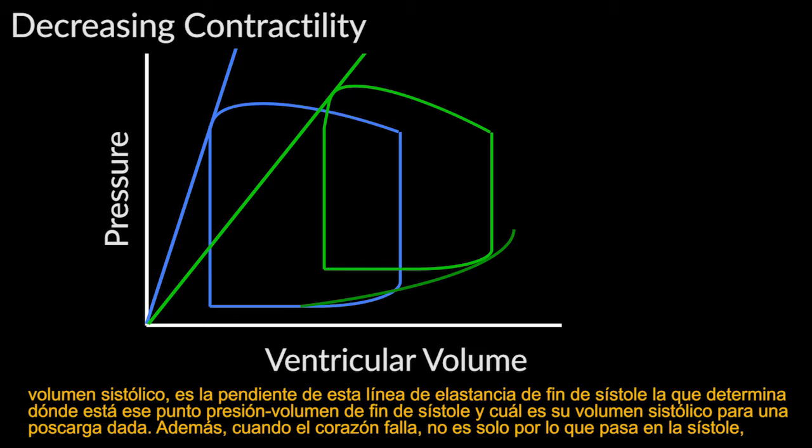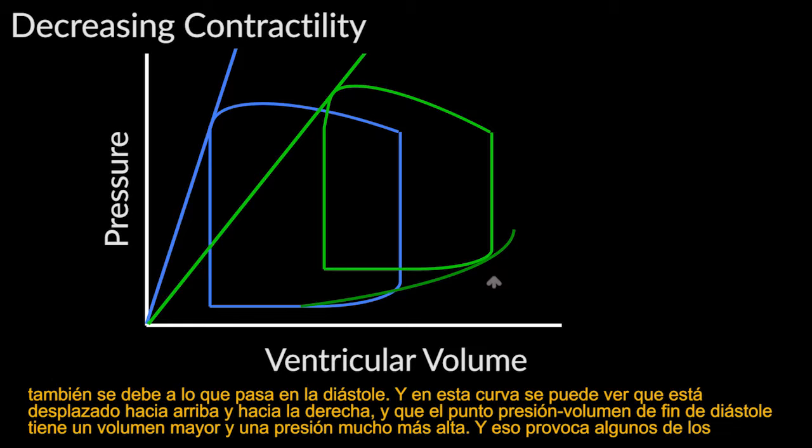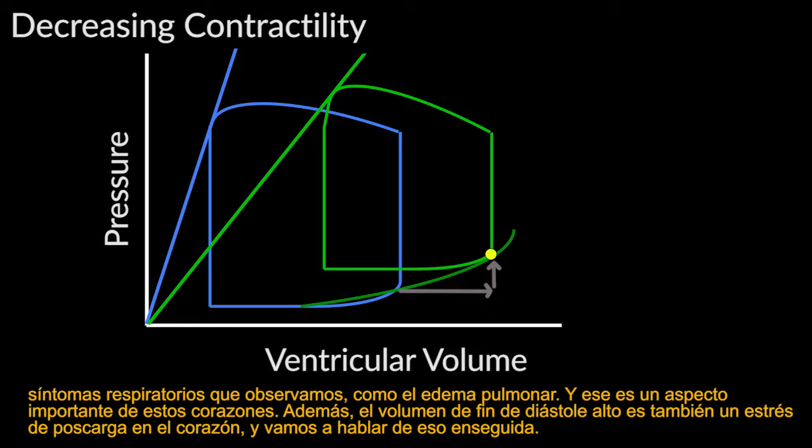When the heart fails, it's not just what happens in systole — diastole matters too. The failing heart operates at a higher end-diastolic volume and much higher pressure, leading to pulmonary edema. Additionally, high end-diastolic volume is also an afterload stress on the heart due to the law of Laplace.